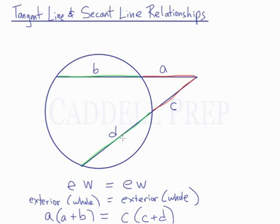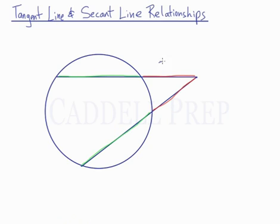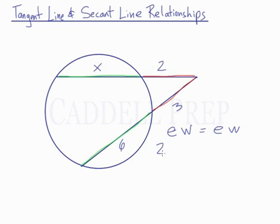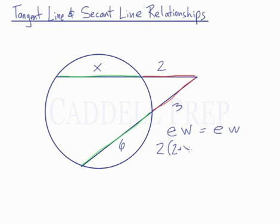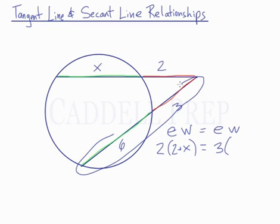Let's do an example with some measurements. The exterior part here is 2, this interior length is unknown (X), this exterior part is 3, and this interior part is 6. So we have exterior times whole equals exterior times whole: 2 times (2 plus X) equals 3 times (6 plus 3), which is 3 times 9.